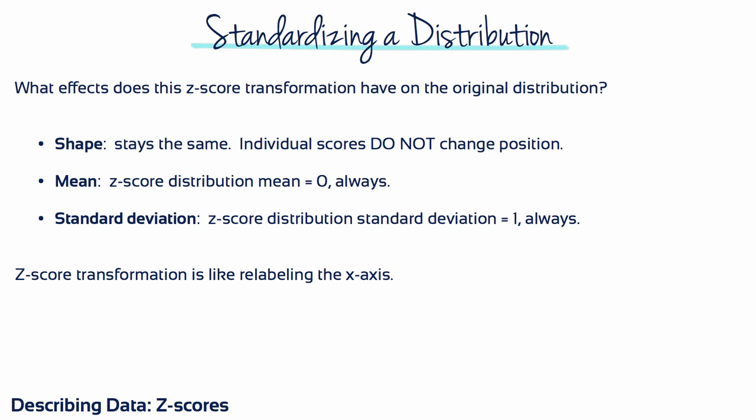It's possible to transform every x-value in a distribution into a corresponding z-score. The result of this process is an entire distribution of z-scores. What effect does this z-score transformation have on the original distribution? Because each individual score stays in its same position within the distribution, the overall shape of the distribution does not change.